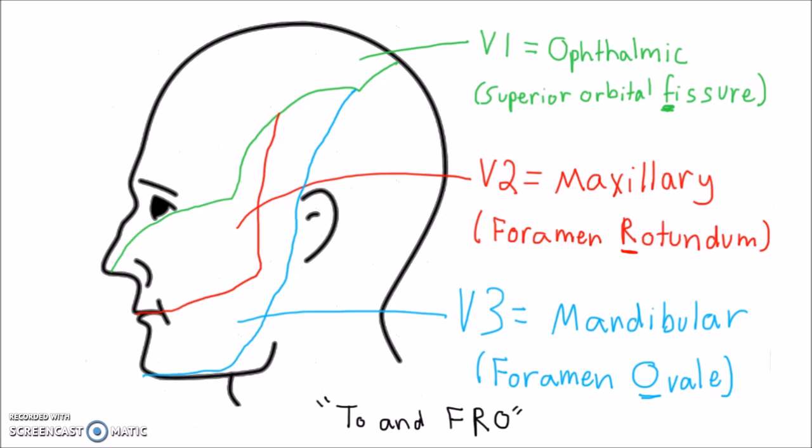The mandibular area includes the inferior teeth, gums, and anterior tongue, and importantly excludes the angle of the jaw, which is supplied by C2/C3.